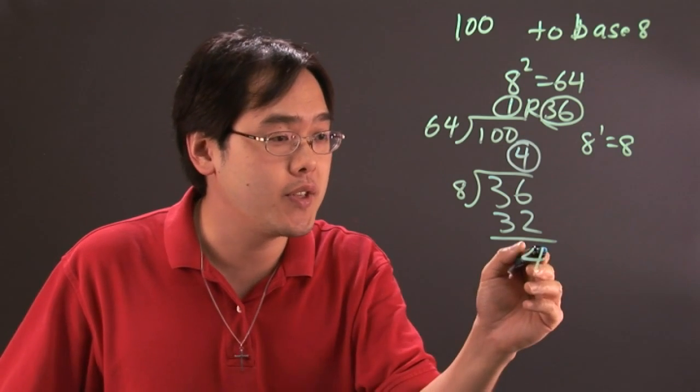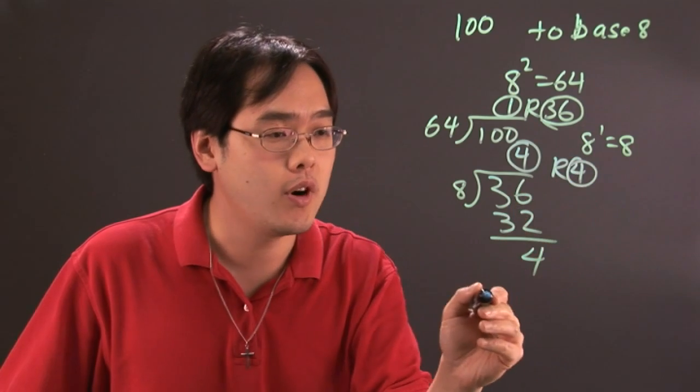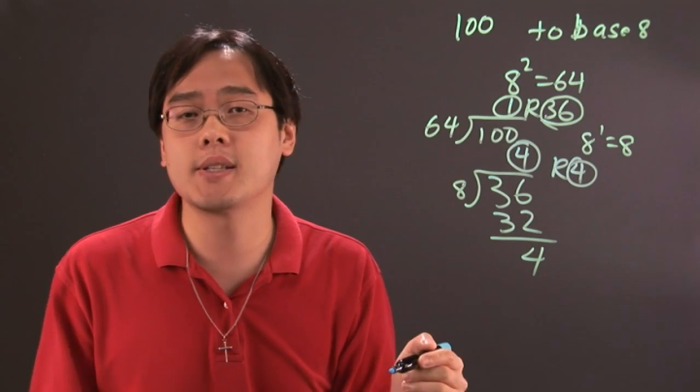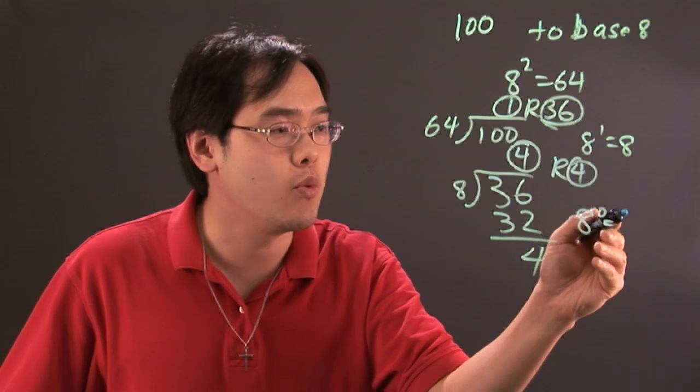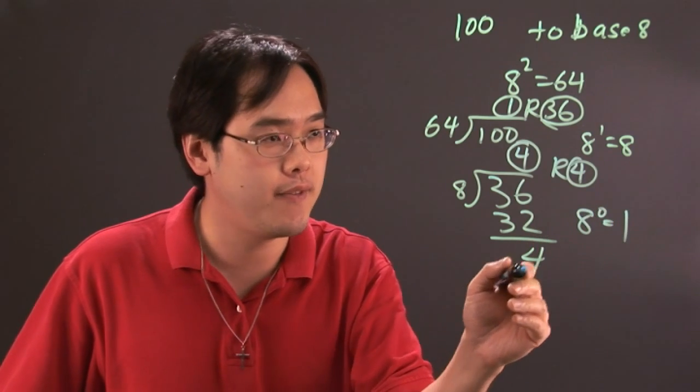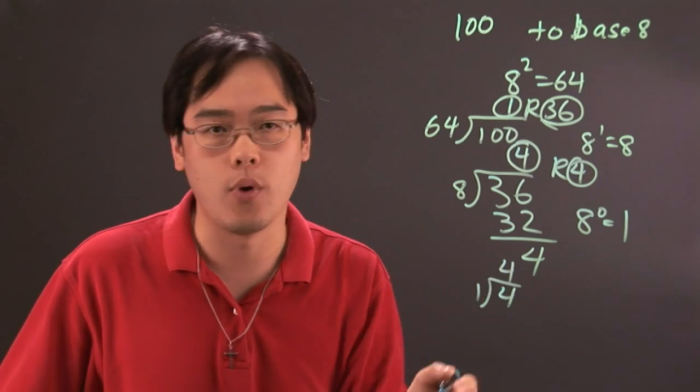Now we're going to take this second remainder which is 4 and we're going to divide by the next and this will be the last power of 8. 8 to the 0 is going to be 1. So we're going to take the 4, the remainder 4, and divide by 1 which is going to be as you know 4.